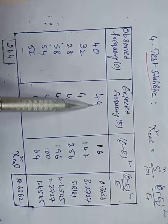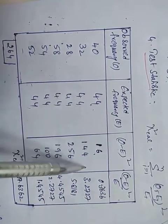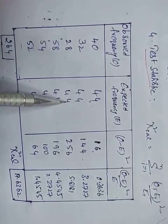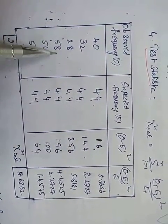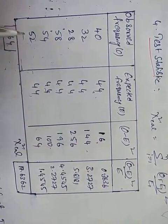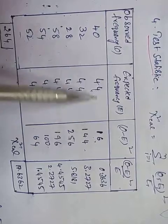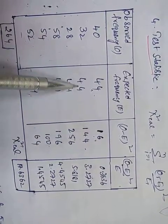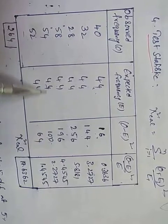Now computing (O minus E) squared divided by E for each face: 40 minus 44 = 4, squared = 16; 32 minus 44 = 12, squared = 144; 28 minus 44 = 16, squared = 256; 58 minus 44 = 14, squared = 196; 54 minus 44 = 10, squared = 100; 52 minus 44 = 8, squared = 64. These give 16/44, 144/44, 256/44, 196/44, 100/44, and 64/44. We sum all of these.